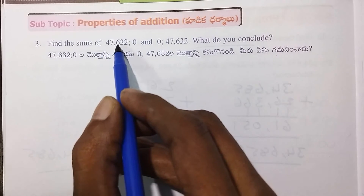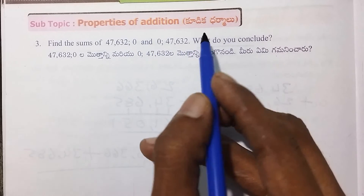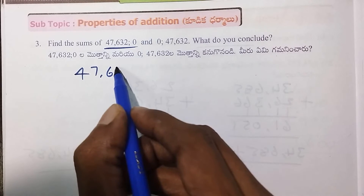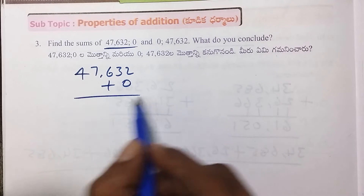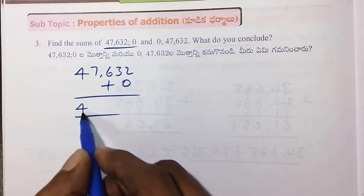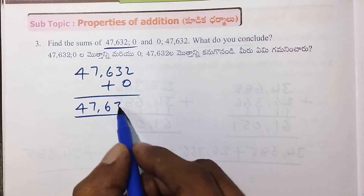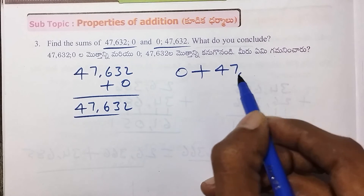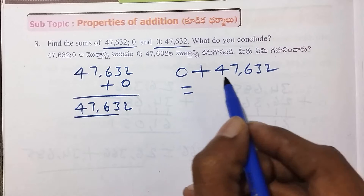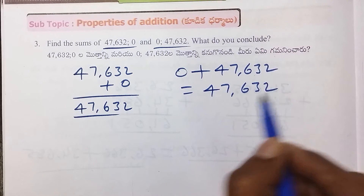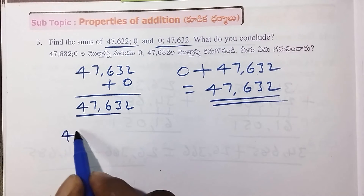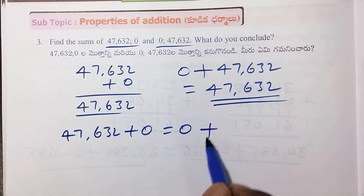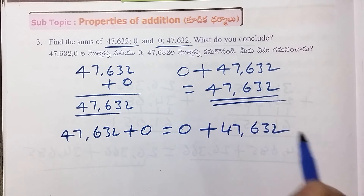Find the sum of 47,632 and 0, and also 0 and 47,632. First, 47,632 plus 0. Then, 0 plus 47,632 equals the same value. So, 47,632 plus 0 is equal to 0 plus 47,632.